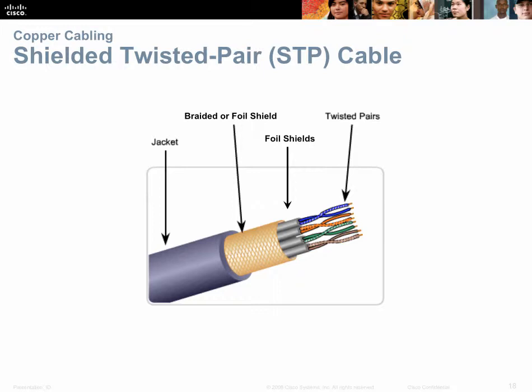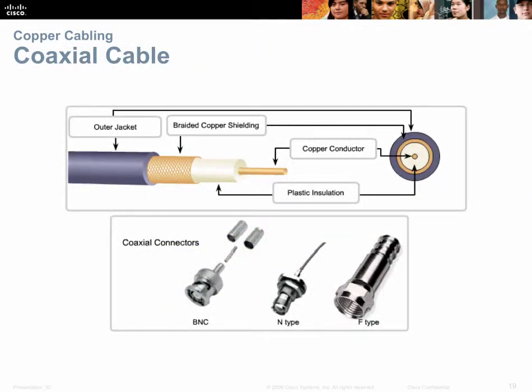For shielded twisted pair, a metal shield — braided or foil — is added. You have the outer jacket, the added shield, some plastic insulation, and then the conductor. This is typical of coaxial cable. Three types of connectors can be crimped onto coaxial cable: the F-type connector you are already familiar with, which screws into the back of your television, and the N and BNC types used in data networking.